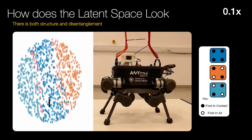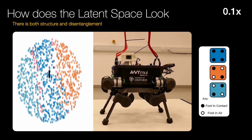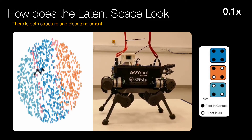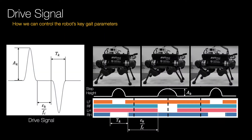Here we show the latent space which has become disentangled into just two dimensions. The robot's footstep length is aligned along the vertical axis while the robot's footstep height is along the horizontal. We exploit this structure by injecting a sine-cubed oscillation drive signal into the latent space. The drive signal's amplitude and phase provide continuous control over the cadence, full support duration, and foot-swing height.